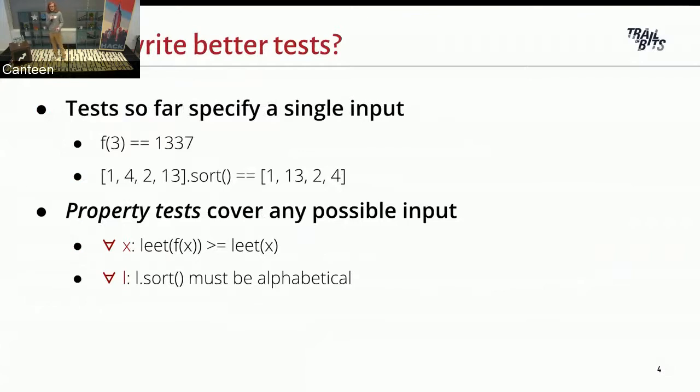So I can generalize those tests. And instead of capturing the behavior on one point, capture the behavior on the whole space. So I could say that no matter what the input is, my function f should make it more leet. Or I say that no matter what my list is, after I sort it, it should be in alphabetical order. That's what sorting means.